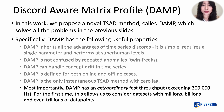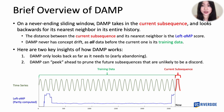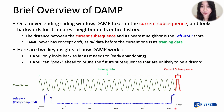Before showing real-world examples to support these claims, I would like to briefly introduce the workings of DAMP. I am going to show you six slides to give you a high-level idea; if you are interested in details, please read the paper. In general, DAMP has a sliding window — the current subsequence — and it looks backward for the nearest neighbor in its entire history. The blue curve at the bottom is called left AMP, and it records the distance between the current subsequence and its nearest neighbor in history. The higher the left AMP score, the more anomalous the current subsequence is.